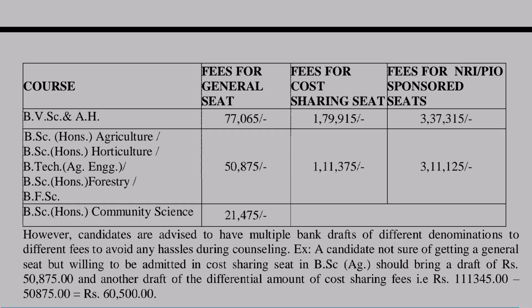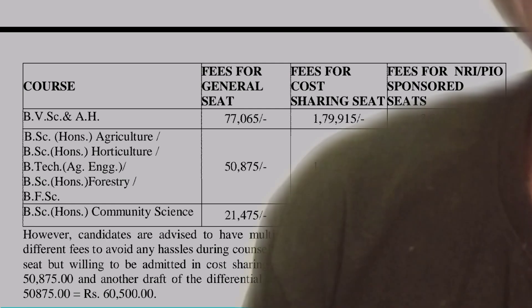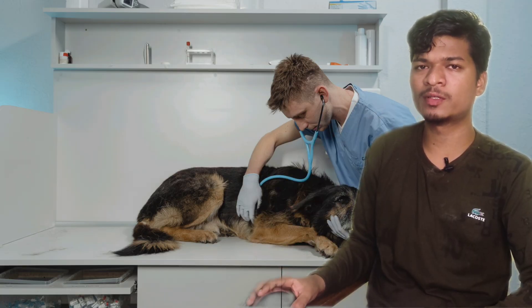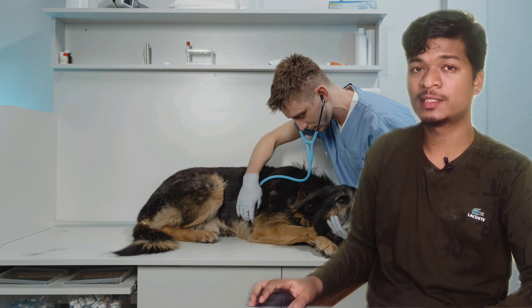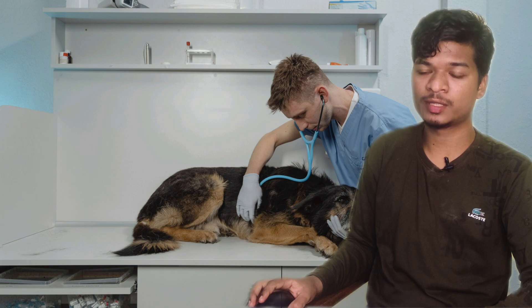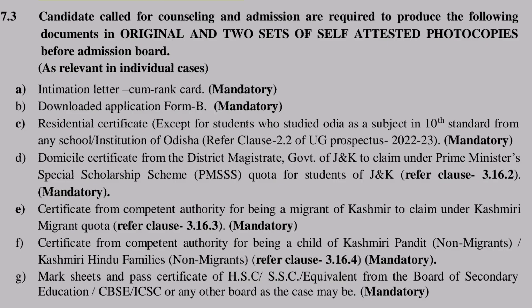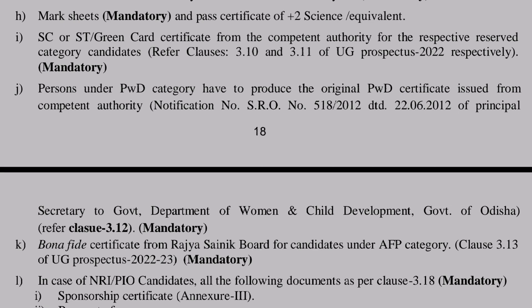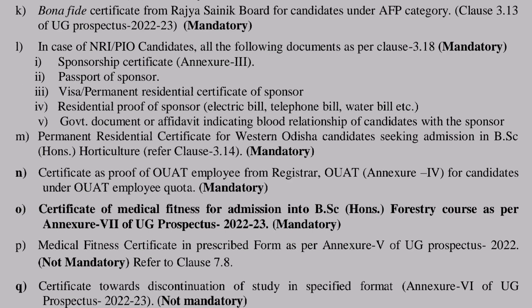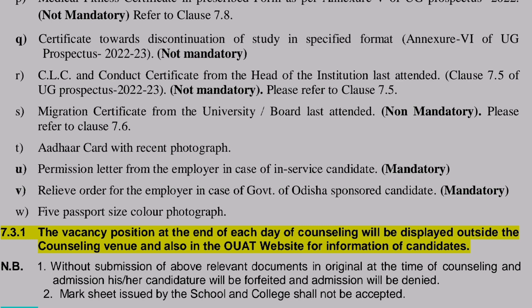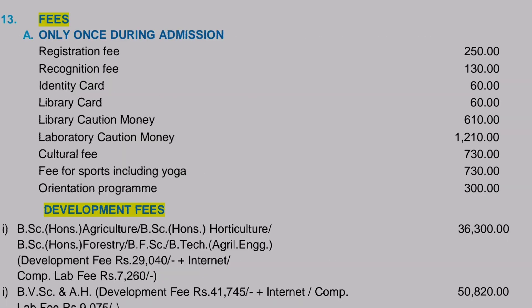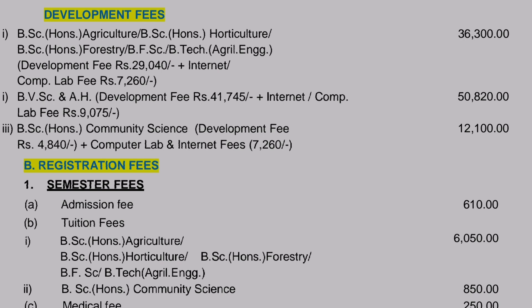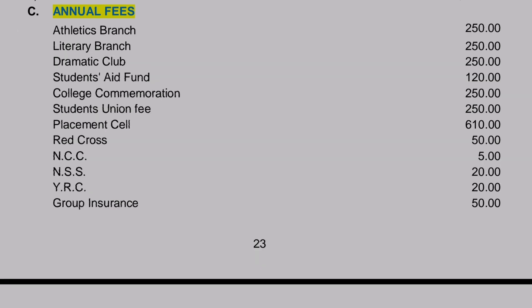This is the amount you have to deposit for admission — this is for the first year only. In subsequent years, you don't need to pay as much; the amount is very less. Let's see the documents you need to produce during counselling. A few are mandatory and a few are not mandatory; those that are not mandatory must be submitted within a stipulated time period. This is the fee structure. And here is information about the scholarship.